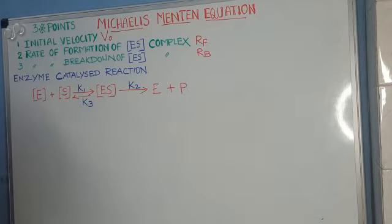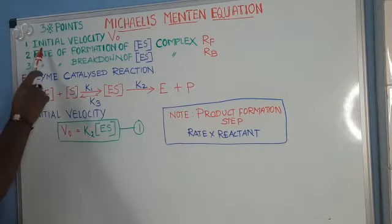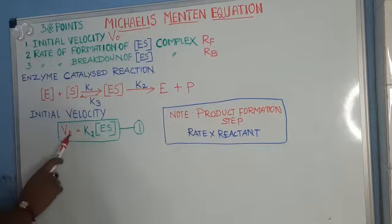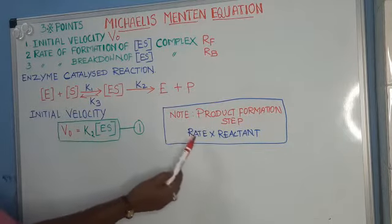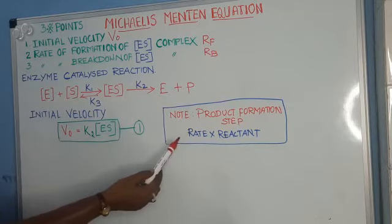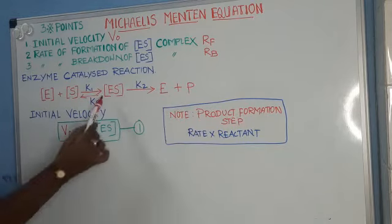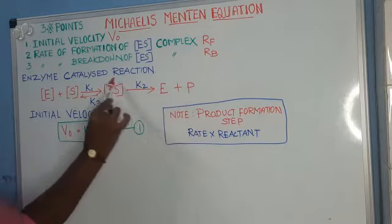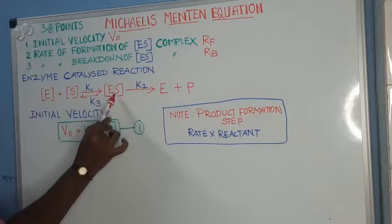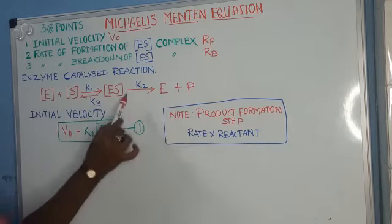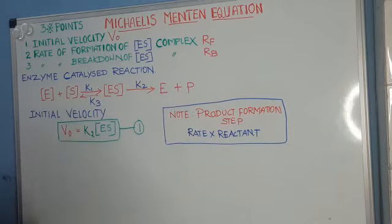With this reaction scheme, we are going to derive the full equation. We have to concentrate on initial velocity V0. For V0, I have given a tip so there is no need to memorize — just understand and write. You have to consider the product formation step. In that step, you take rate multiplied by reactant. The rate is K2 and the reactant is ES. So V0 equals K2 into [ES].